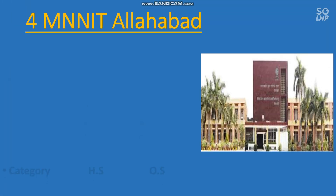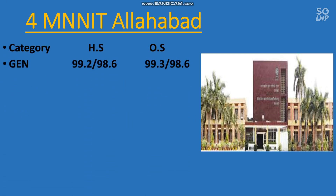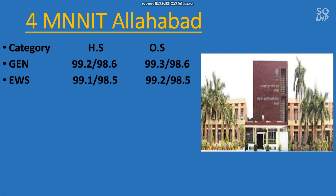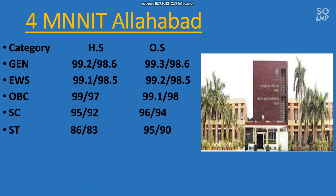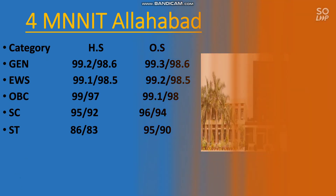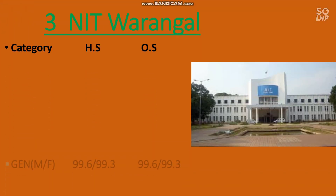The next one is number 4, MNNIT Allahabad. The cutoff for the EC branch is: General — 99.3, EWS — 99.2, OBC — 99.1, SC — 96, and ST — 95 percentile required.